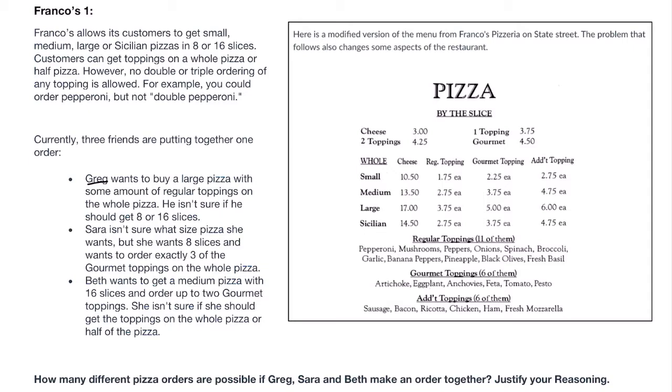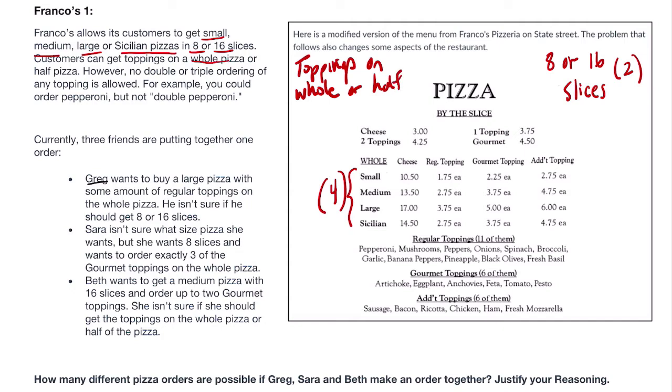There are four sizes - it allows customers to get small, medium, large, or Sicilian pizzas. You can see that right here, here's our four sizes. And eight or 16 slices. I don't see it listed on the menu, but you can get eight or 16 slices. So that's two choices there, and there's four choices for size. And then you can get toppings on a whole pizza or half pizza. So toppings, you can get on whole or half.